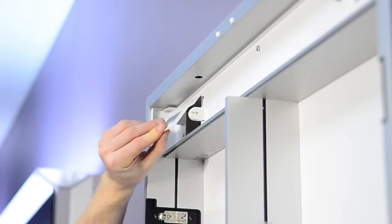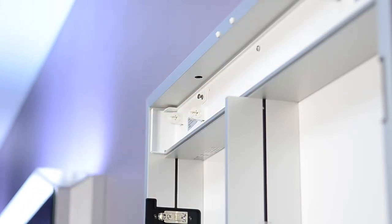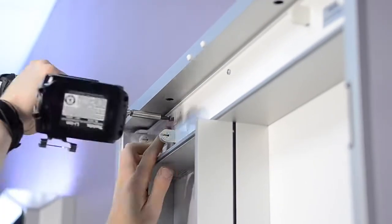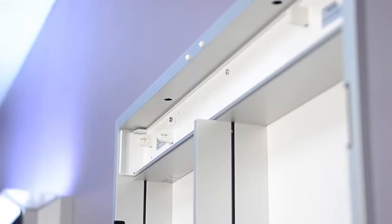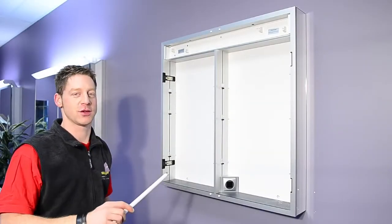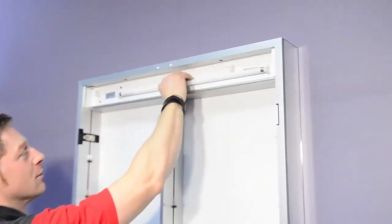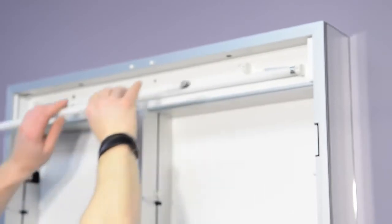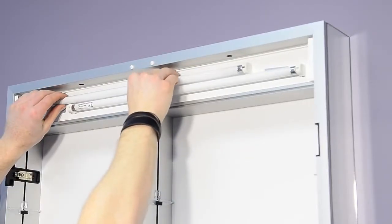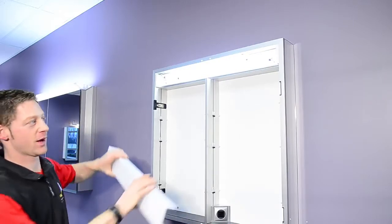Now we put back on the cover. Then we put back in the fluorescent tubes. And the light is working. We also put back the light cover.